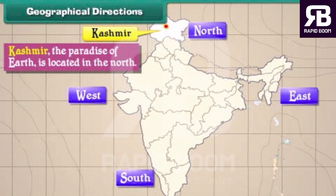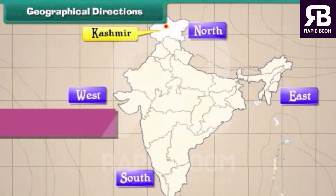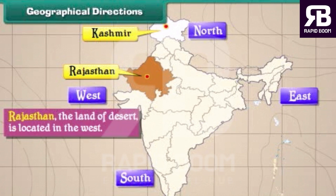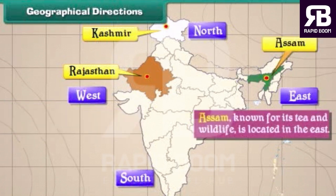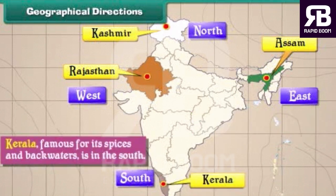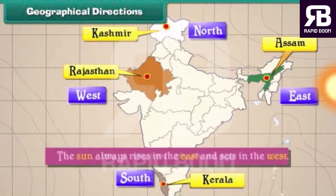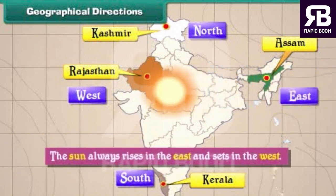Kashmir, the paradise of earth, is located in the north. Rajasthan, the land of desert, is located in the west. Assam, known for its tea and wildlife, is located in the east. Kerala, famous for its spices and backwaters, is in the south. The sun always rises in the east and sets in the west.